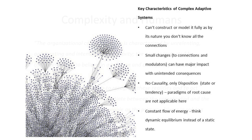What are some key characteristics of complex adaptive systems? You can't construct or model it fully, as by nature you don't know all the connections, and you need a lot of computational maths to model complex systems in any detail. There are small changes that can have major impact with unintended consequences, which may be positive or negative. There's no causality — there's a disposition of the system itself, the state or tendency of it. The paradigms of root cause are really not applicable here, and there's a constant flow of energy — think dynamic equilibrium instead of a static state.